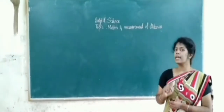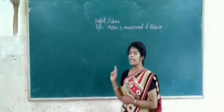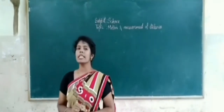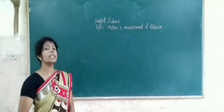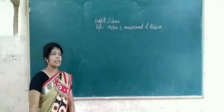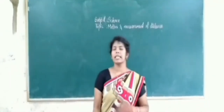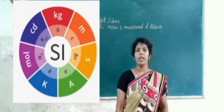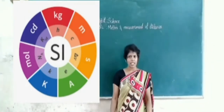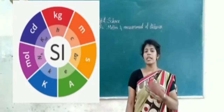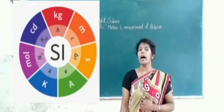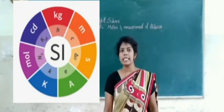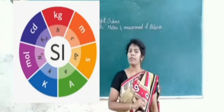In older days, people used non-standard units of measurement. But in 1790, French scientists created a new system called the International System of Units. The use of the International System of Units is that all over the world, whatever object we measure using these units, the result is accurate for everyone.